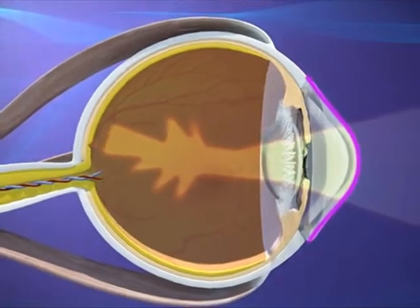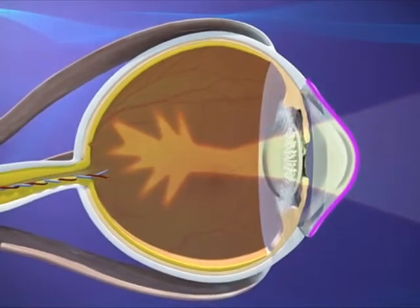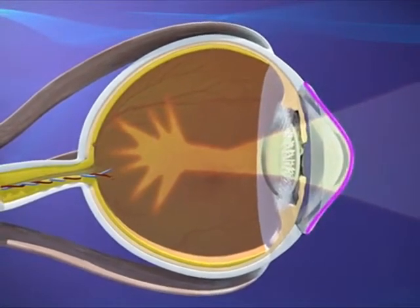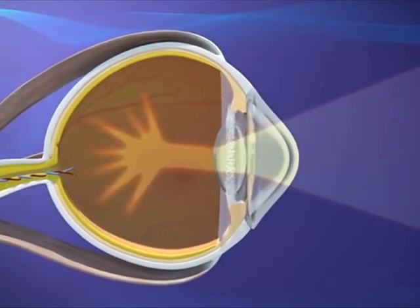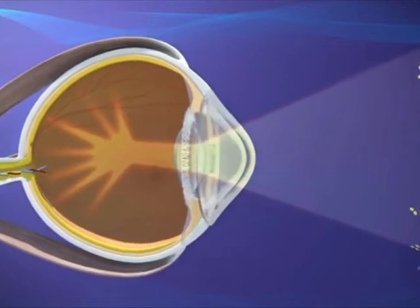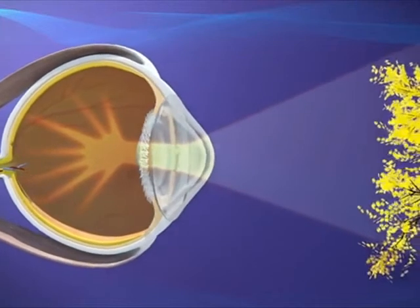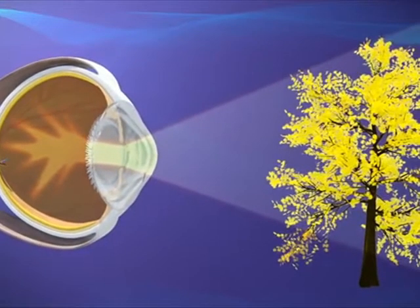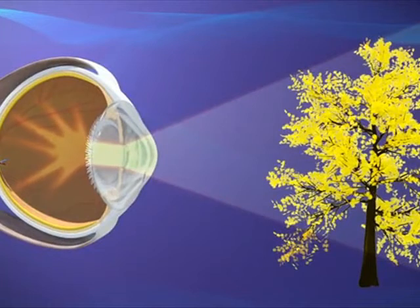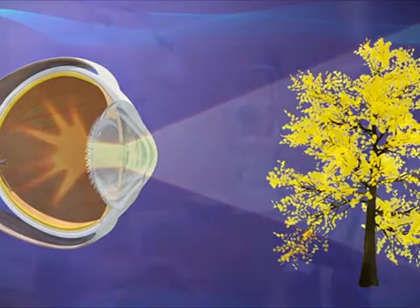But with astigmatism, the cornea has more of an oblong shape, like an oval, causing light to bend and distort as it passes through the lens. This makes objects appear blurry or unfocused, because light rays are not focused on one spot to provide clear vision.